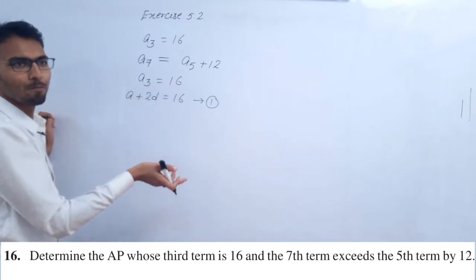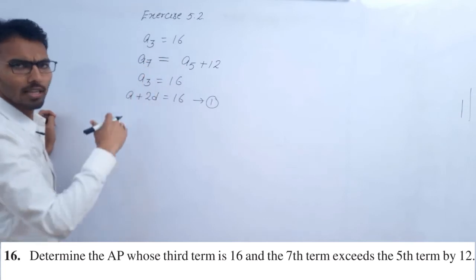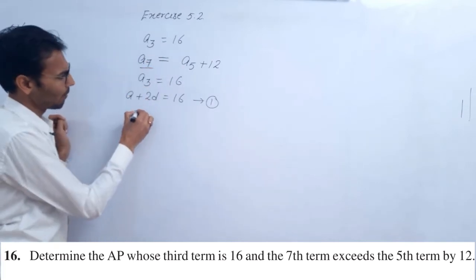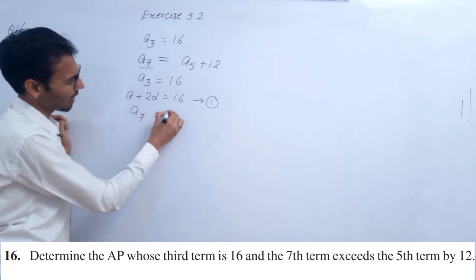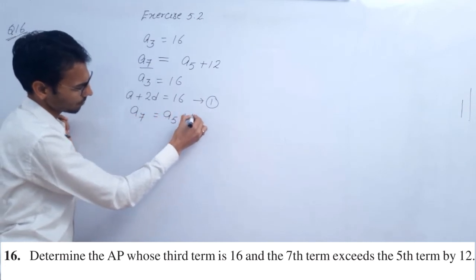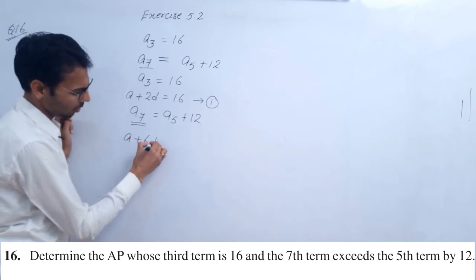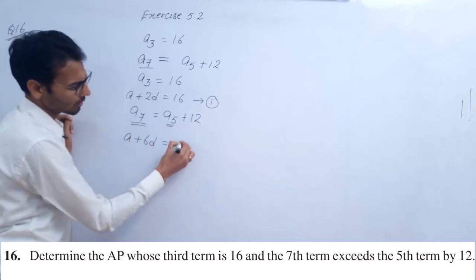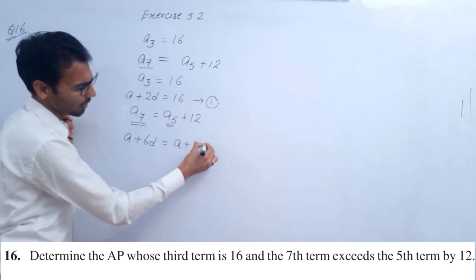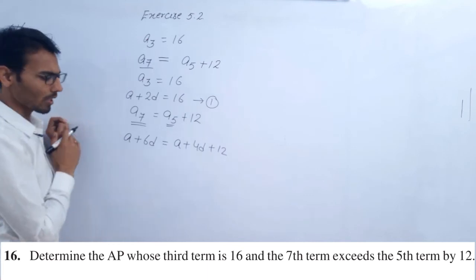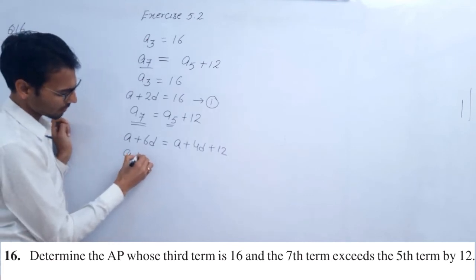Second equation is a₇ is equal to a₅ plus 12. a₇ is equal to a plus 7 minus 1 is 6d, which is equal to a₅, a plus 4d plus 12.